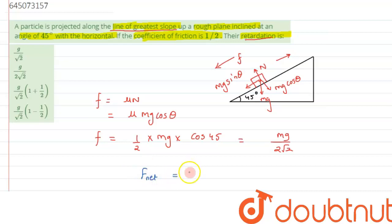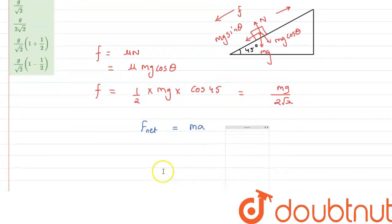So from that we can write F_net, that is net force acting on the particle, is equal to the product of mass into acceleration. So from here we can write the forces that have been acting on the body...